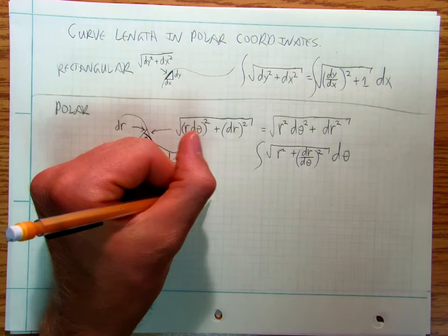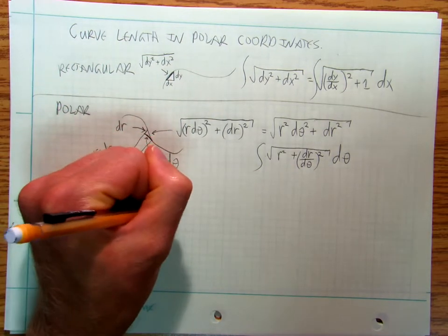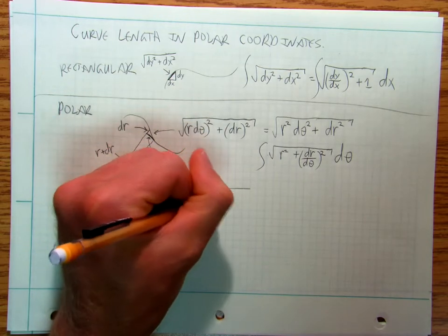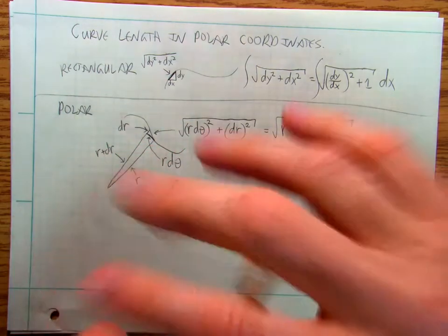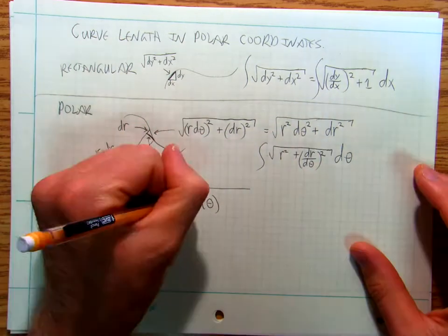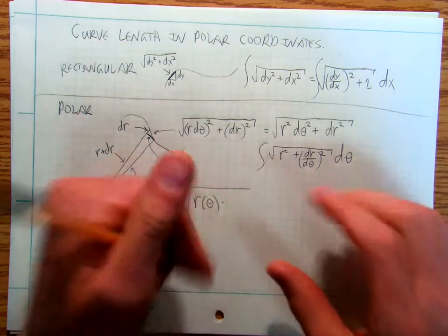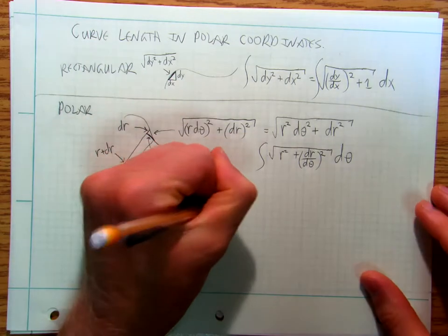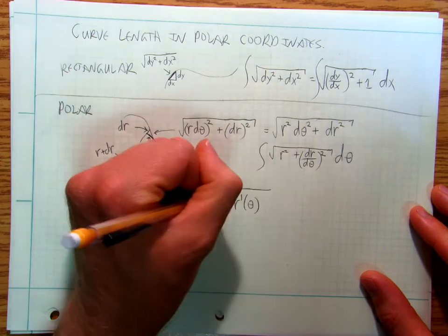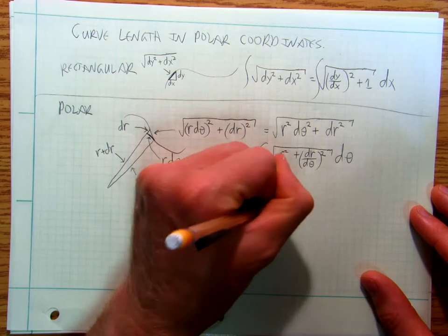The formula for curve length in polar coordinates is the integral of the square root of r(θ) squared plus r′(θ) squared, dθ.